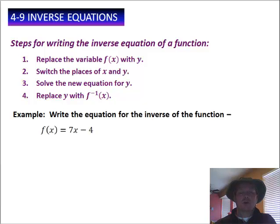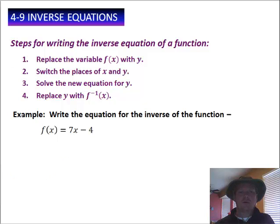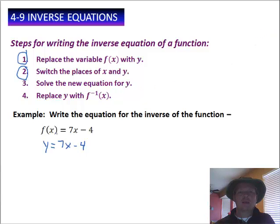Now that you've written all that down, let's go ahead and work an example. We're just going to follow these steps. The first one says write the equation for the inverse of the function f of x equals 7x minus 4. So following the first step, we replace f of x with y. Then the second step says to switch the places of x and y, so we write x equals 7y minus 4.